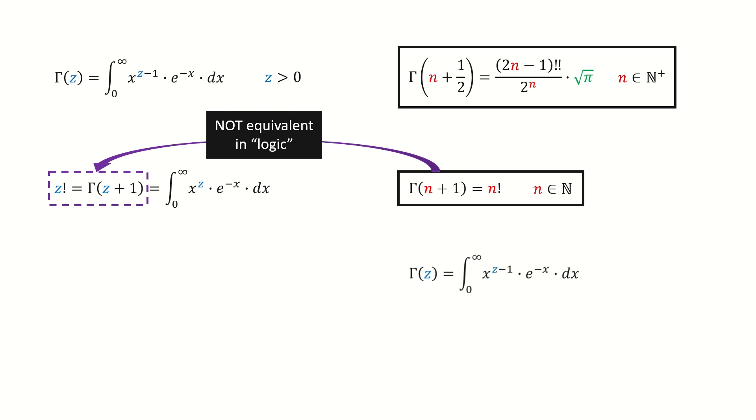For the integer case, we take the definition of the gamma function. Then we set z equals n plus 1. So we get this integral with the integer power. After calculating this integral, it equals n factorial.